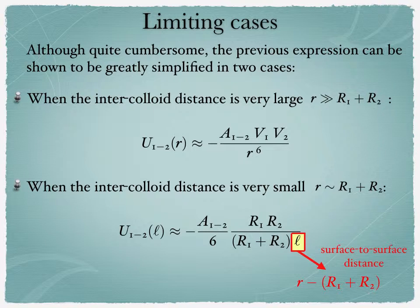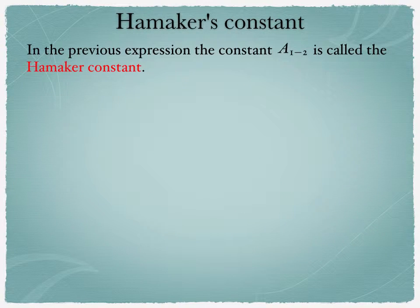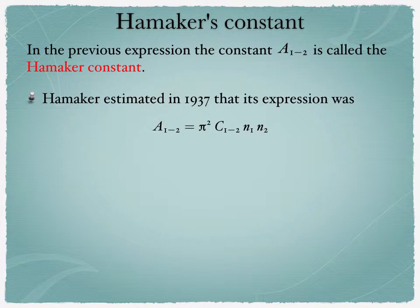So the last thing I want to discuss is this constant a12. This is called the Hamaker constant, and it plays a crucial role to get a quantitative picture or at least semi-quantitative picture of what's going on in most materials. This constant was estimated, or at least its expression was estimated back in 1937, when Hamaker calculated the integral that I showed before. And he found that it was π² times c12, n1, n2.